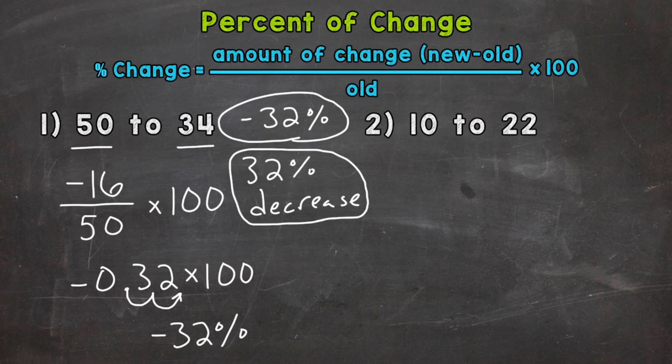Now remember, whenever you see a negative, that represents a decrease. Let's move on to number two, where we have 10 to 22. So we can see that we have an increase there. We started with a 10, and now we have a 22.